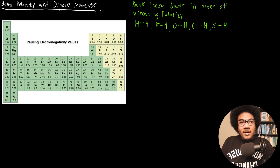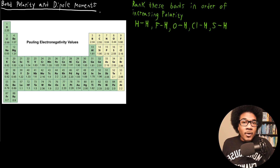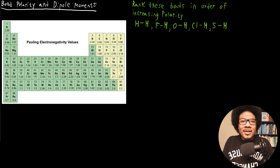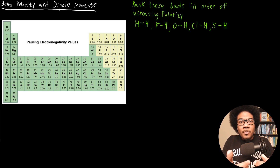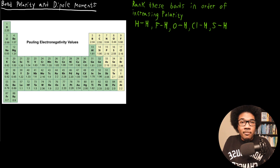In this video, we're going to discuss bond polarity and dipole moments. In a previous video, we talked about polar covalent bonds and how they result from the unequal sharing of electrons, which results in one end of the bond having a partial negative charge and one end having a partial positive charge. The degree of how polar that covalent bond is — that's what we call polarity.